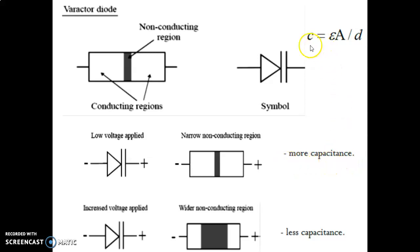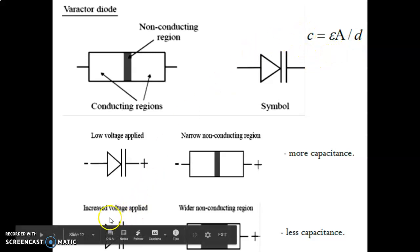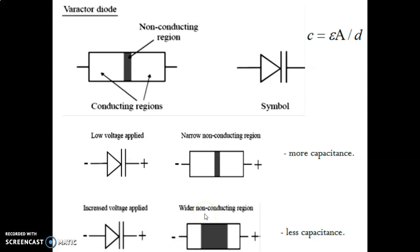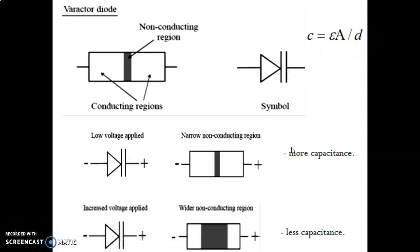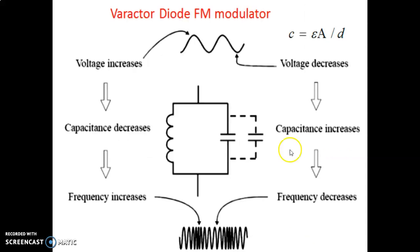How does capacitance increase? Looking at the formula C = εA/d: when the distance between the plates reduces, capacitance increases. On the other hand, when high increased voltage is applied, the depletion region becomes wider, going towards reverse bias; the distance between the plates increases, so d increases and capacitance reduces. This is the principle of operation of varactor diode. This diagram explains the working of the varactor diode with the modulating signal — you can see the modulating signal here and the symbol of the varactor diode.